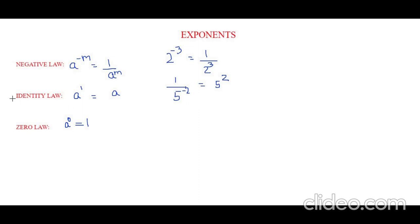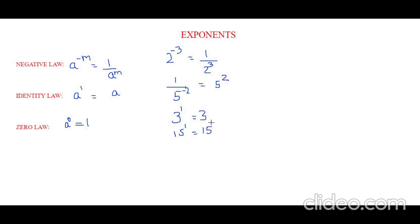Now let's learn the fifth law, which is the identity law, which is very easy. It's just a to the power of 1 equals a. Any number to the power of 1 is always the number itself. For example, 3 to the power of 1 is 3, and 15 to the power of 1 is also 15. So, anything to the power of 1 is itself.